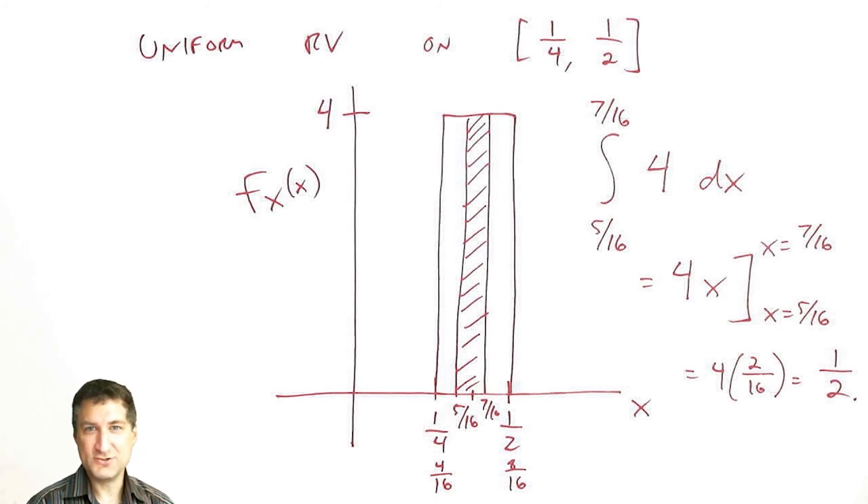In the next lecture I'm going to introduce a new continuous random variable called the exponential random variable, and after that we're going to talk about the Gaussian random variable, which is one of the most important random variables in engineering. See you next time.